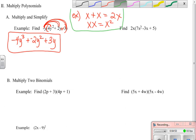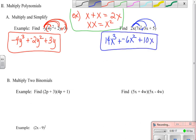This next example is also a distributive property. I'm going to change this to plus a negative 3x. So I have 2x times 7x squared is 14x cubed. 2x times negative 3x is negative 6x squared. 2x times 5 is 10x. And again, those are all review problems for you.